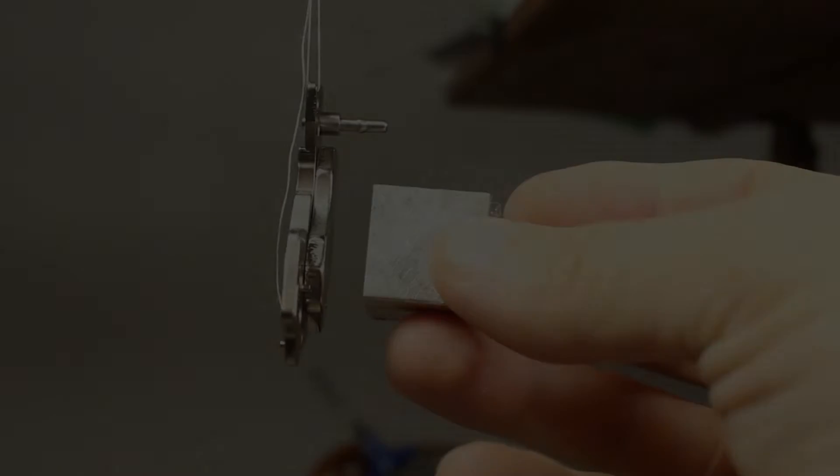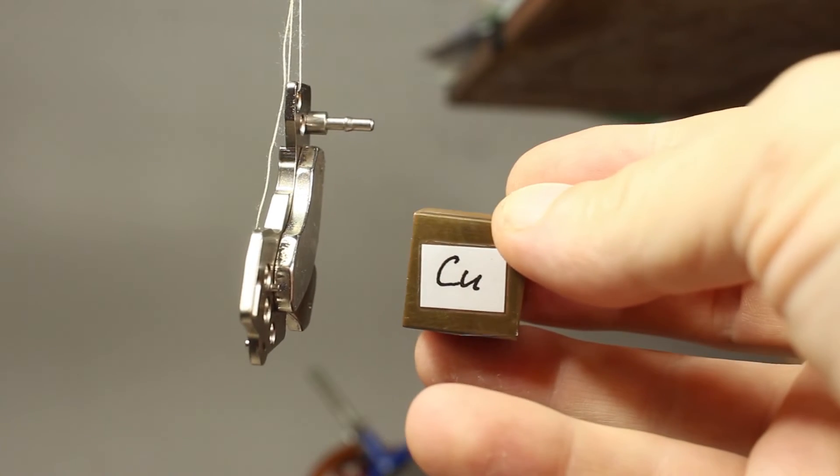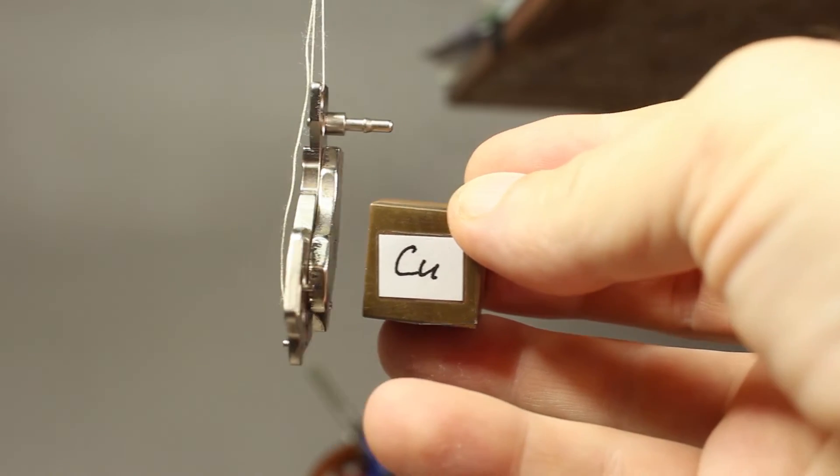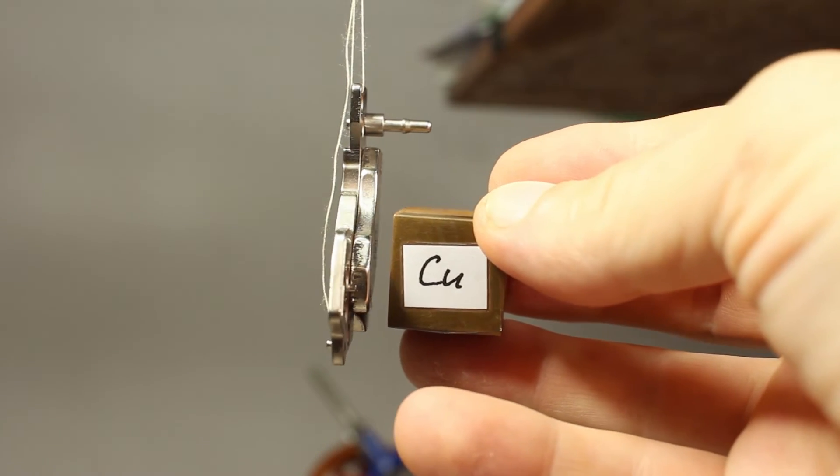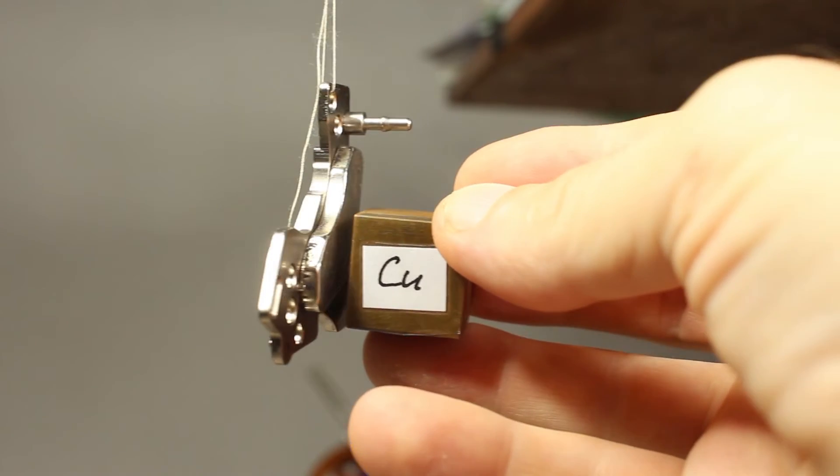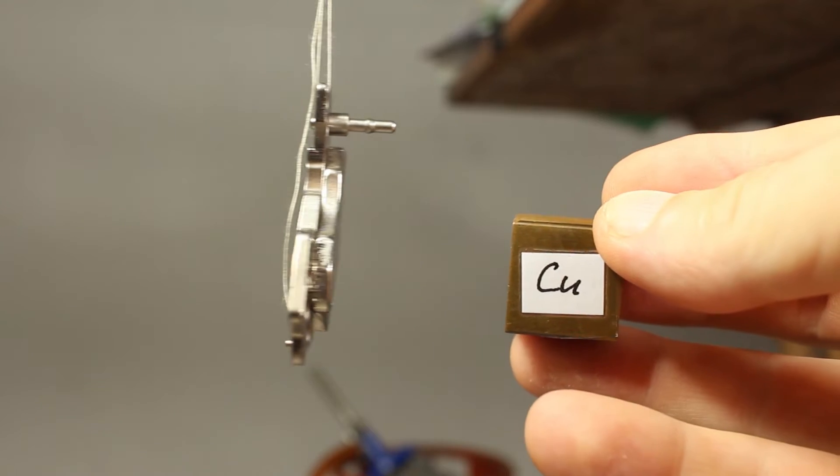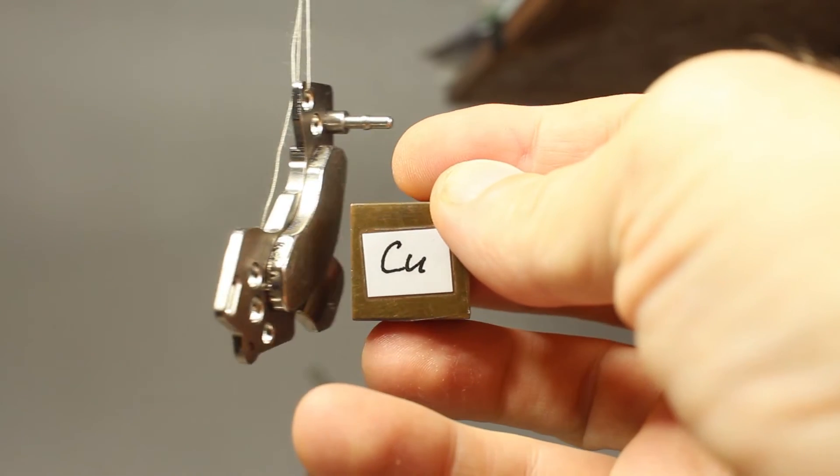The same thing works with copper. Though copper is diamagnetic, slightly repelling, but the effect is so slight that I even couldn't detect it with the scale. But you see, exactly same effect is happening here. Then what is going on?